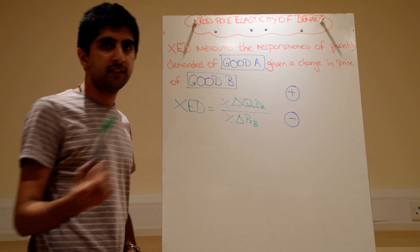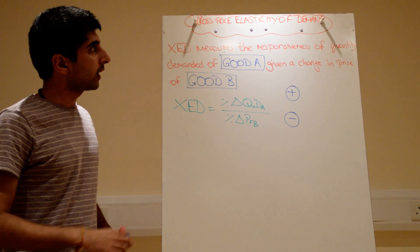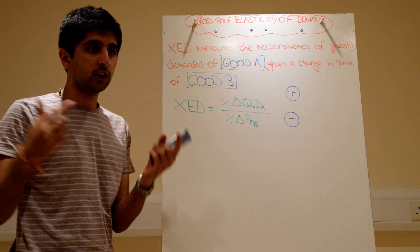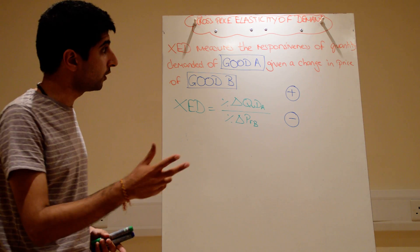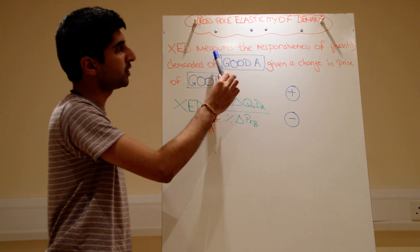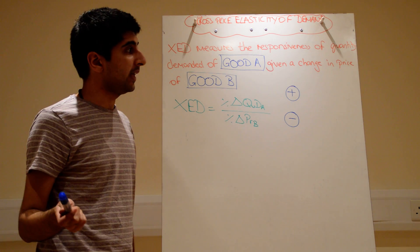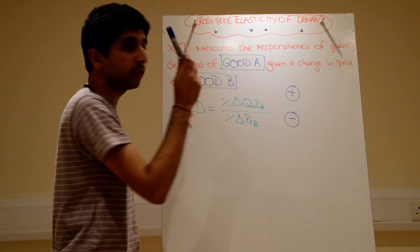Okay, the last elasticity I'm going to talk about is cross-price elasticity of demand. Cross because we're looking across two goods. Cross elasticity of demand measures the responsiveness of quantity demanded of good A given a change in price of good B.